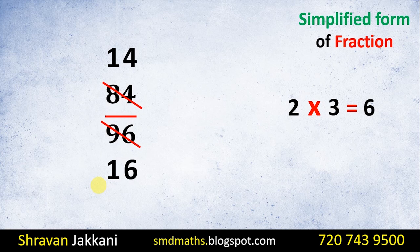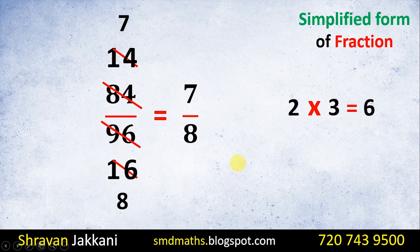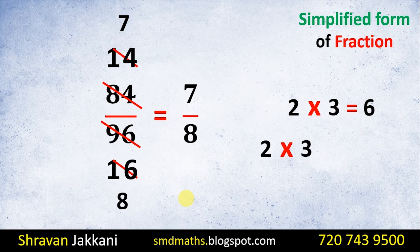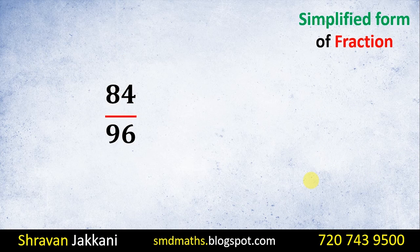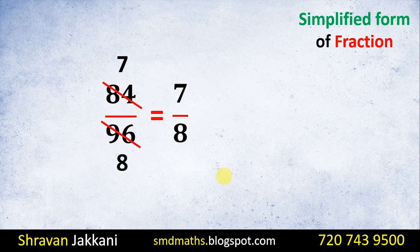Now we check 7 by 8. Can we divide further? 8 equals 2 times 4, but 7 is not divisible by 2. So 7 and 8 are co-primes — they have no common factor. The process is finished, and 7 by 8 is the simplified form.